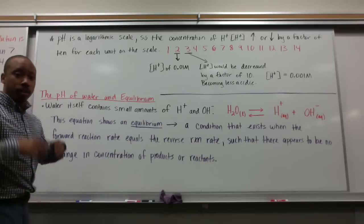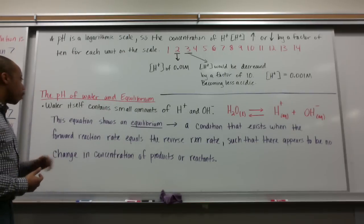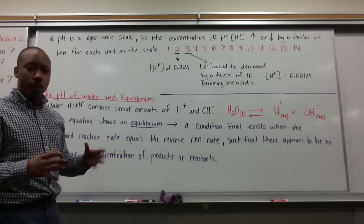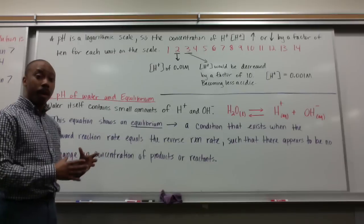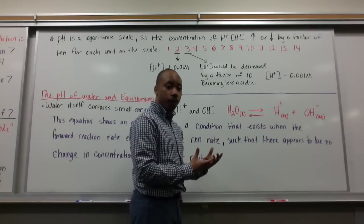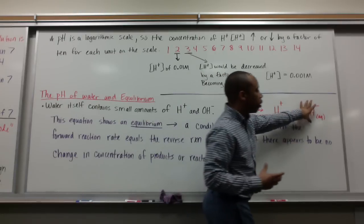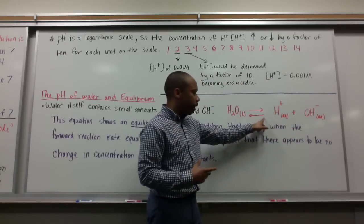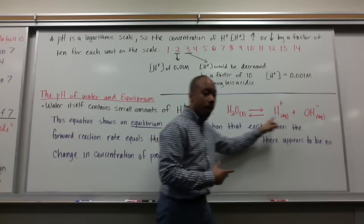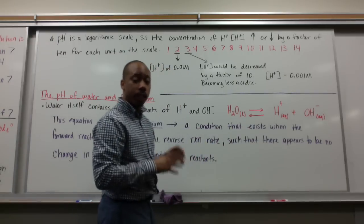Let's talk about water. Water is extremely important when we talk about acids and bases. Water itself contains small amounts of H plus and OH minus. When water is standing by itself, pure water dissociates into H plus and OH minus. Then we see this arrow go backwards - it goes right back to water, then back to ions, then back to water. It goes back and forth.